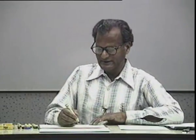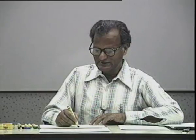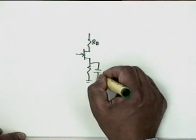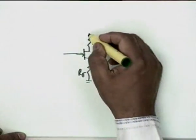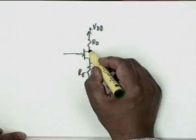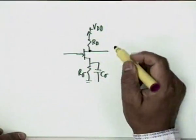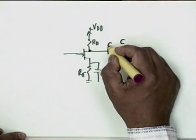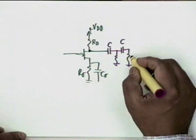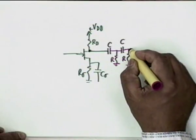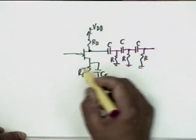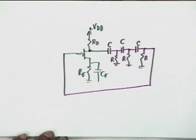Drawing the FET-based oscillator circuit: we have R_D, R_σ bypassed by C_σ, and +V_DD. Then we bring in the feedback circuit: CR, CR, and then another CR. No further coupling capacitor is needed because the capacitor itself serves that job. This is the circuit of an FET RC phase shift oscillator.